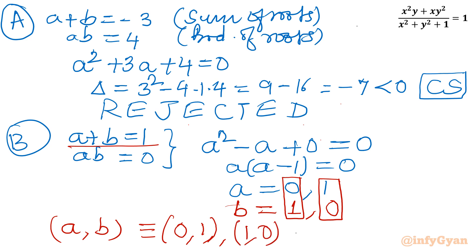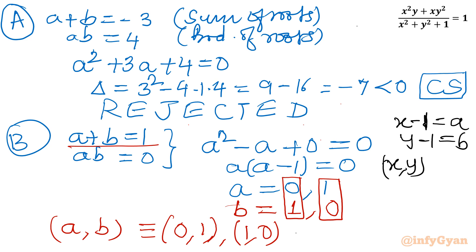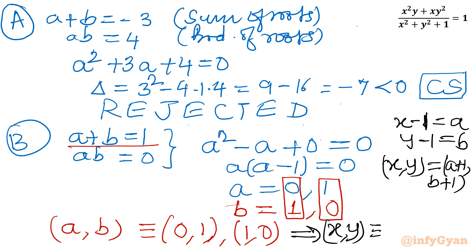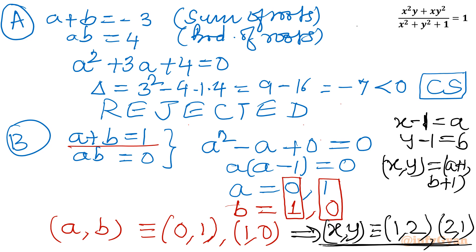Recalling our substitution x = a+1, y = b+1, we add 1 to each value. So (a, b) = (0, 1) gives (x, y) = (1, 2), and (a, b) = (1, 0) gives (x, y) = (2, 1). First pair of solutions: (1, 2) and (2, 1).